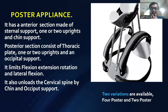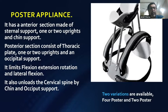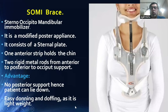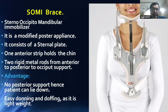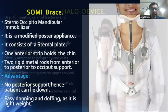Poster appliances have four posts. The four-post cervical collar has an anterior section made of sternal support with one or two uprights to the chin, and a posterior section with a thoracic plate. It limits flexion, extension, rotation, and lateral flexion, and unloads the cervical spine via chin and occipital support. It may be a two-post or four-post cervical collar. The SOMI brace — sternal occipital mandibular immobilizer — is a modified poster appliance. It consists of a sternal plate, one anterior strip holding the chin, and two rigid metal rods from anterior to posterior occipital support. Advantage: no posterior support, so the patient can lie down easily; easy donning and doffing; lightweight.